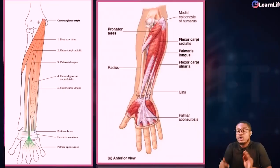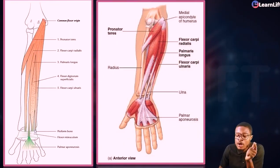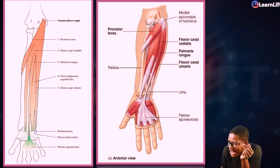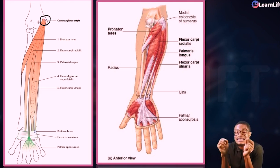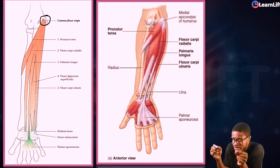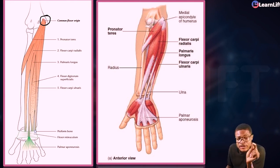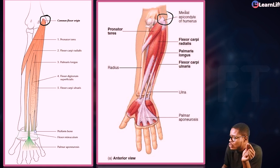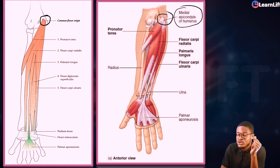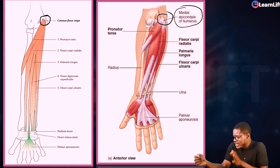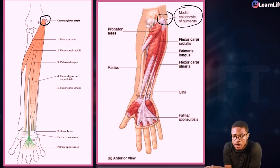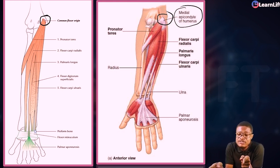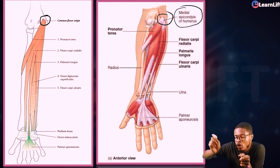Now look at this diagram. Number one is this point — that's the common flexor origin. That common flexor origin is the same thing you have here, which is why it is called the medial epicondyle of the humerus. All the muscles in the superficial anterior compartment of the forearm originate from the common flexor origin: the medial epicondyle of the humerus.